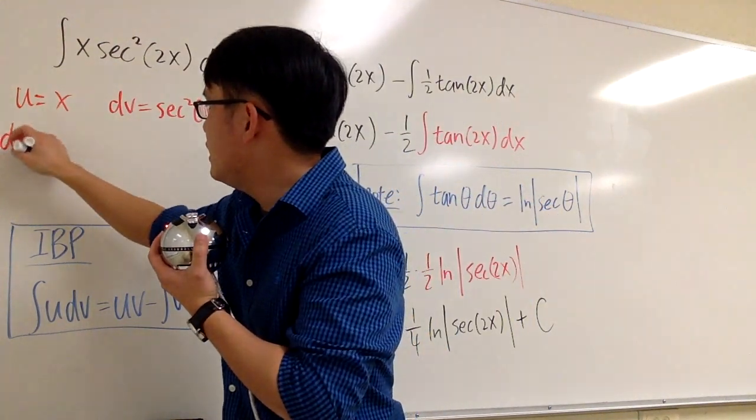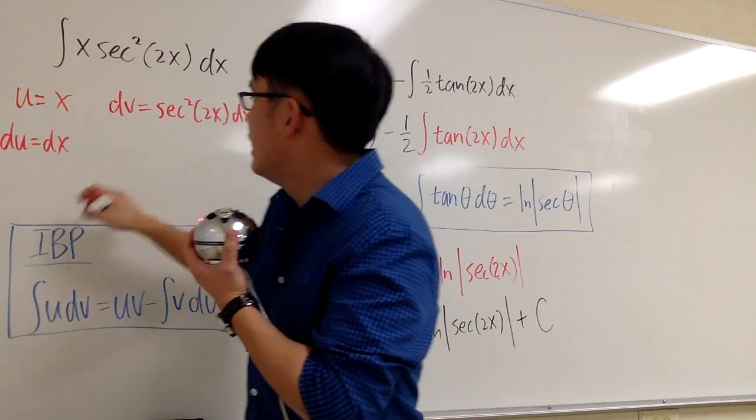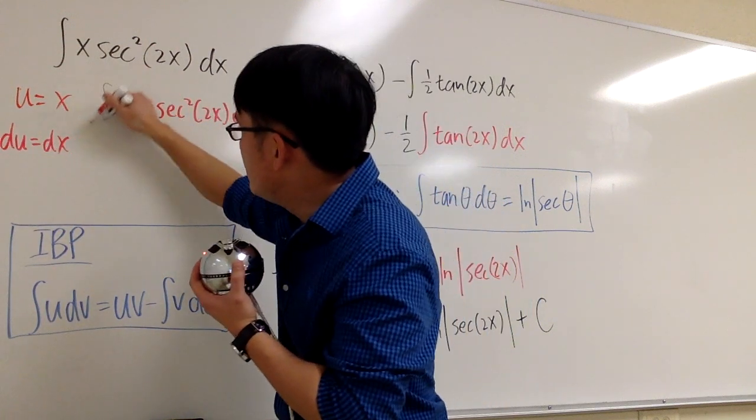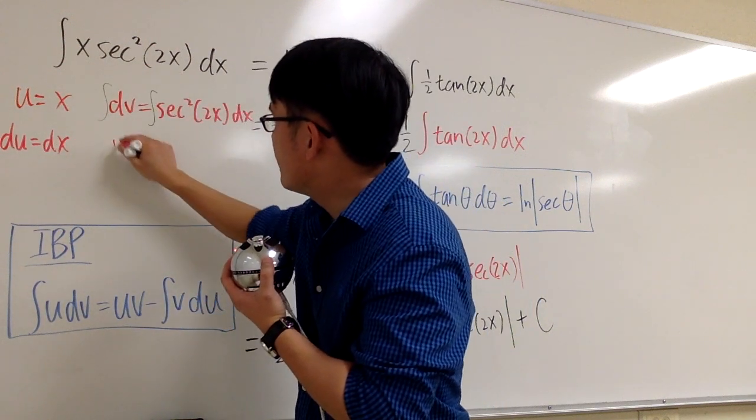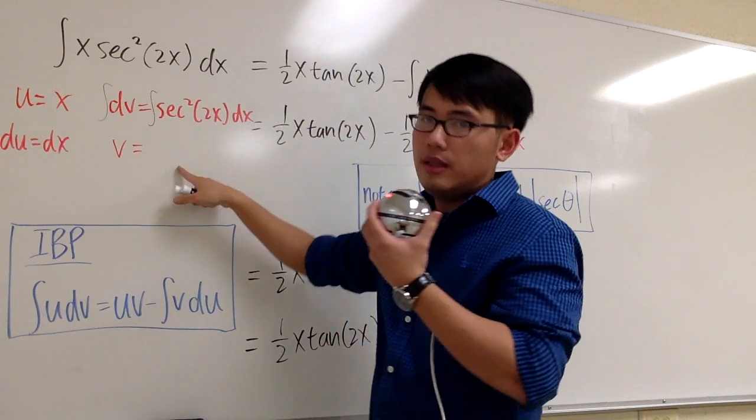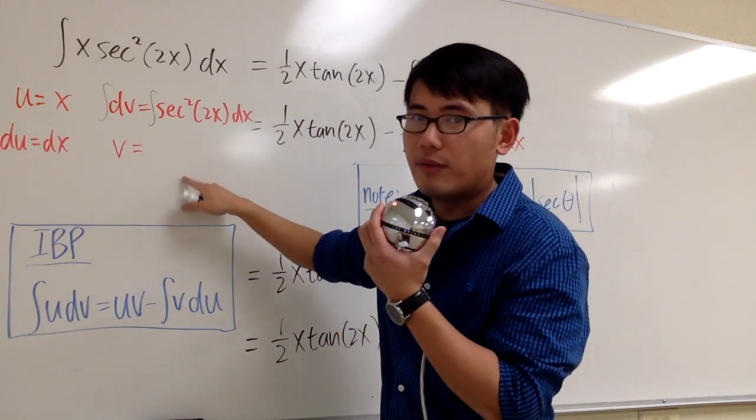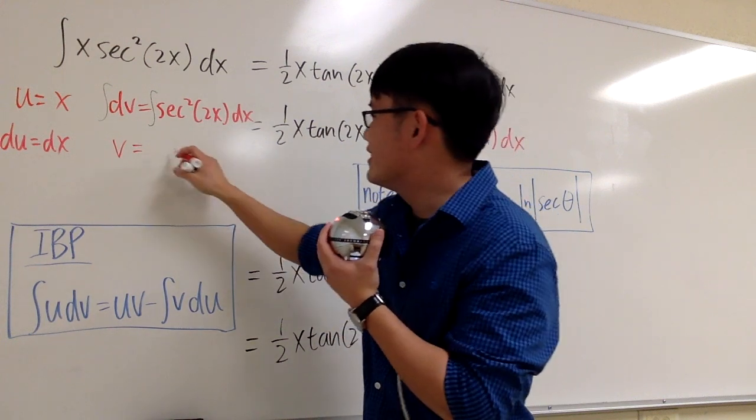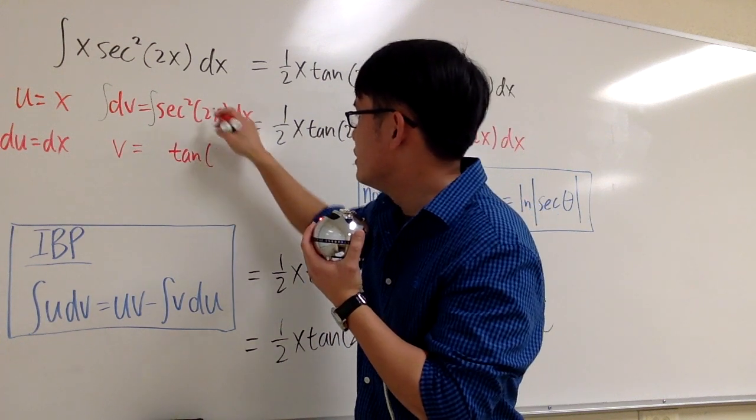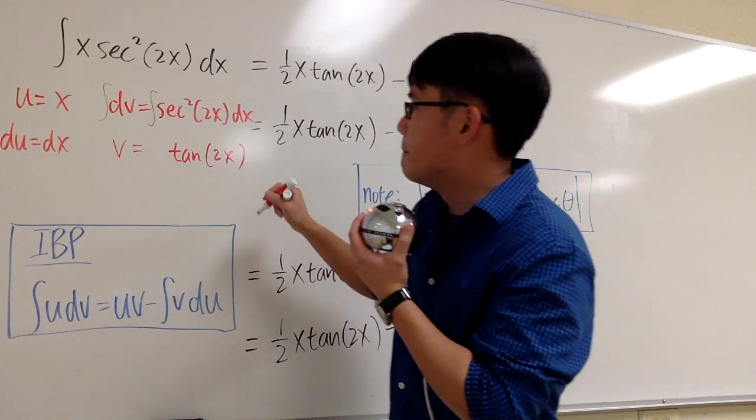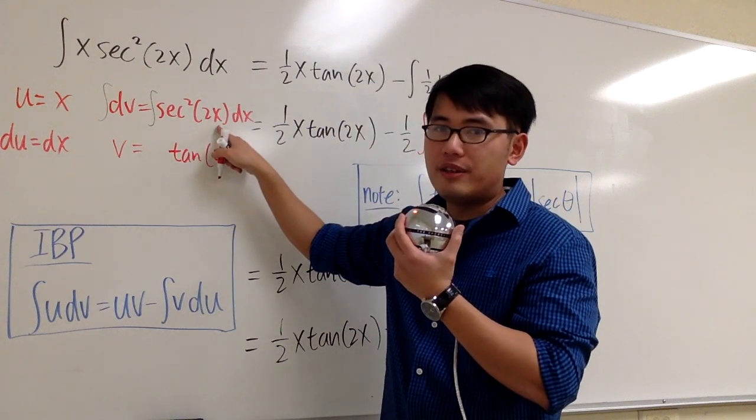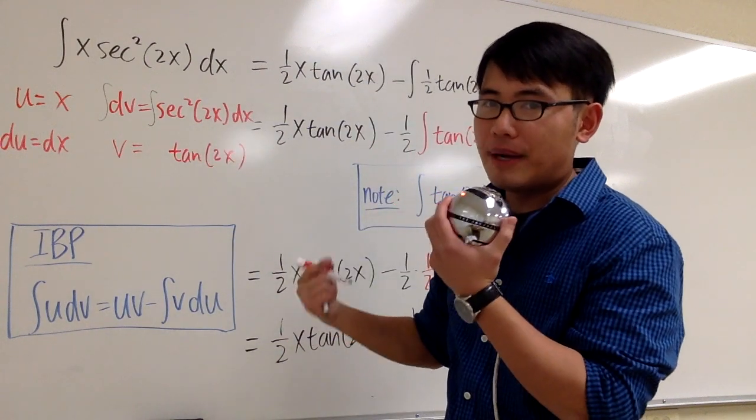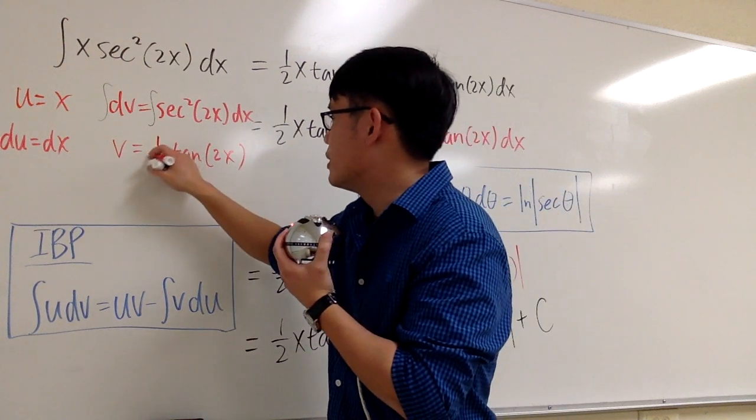Let's differentiate this. We get du equals dx, and let's integrate this. So let me integrate both sides. We will have v equals to... Well, let's ask ourselves, the derivative of what will give us secant squared? The answer to that is tangent. So we have tangent, and the inside stays the same. But then because we had a 2x right here, we will have to divide it by 2. It's the same as saying multiply by 1 half.